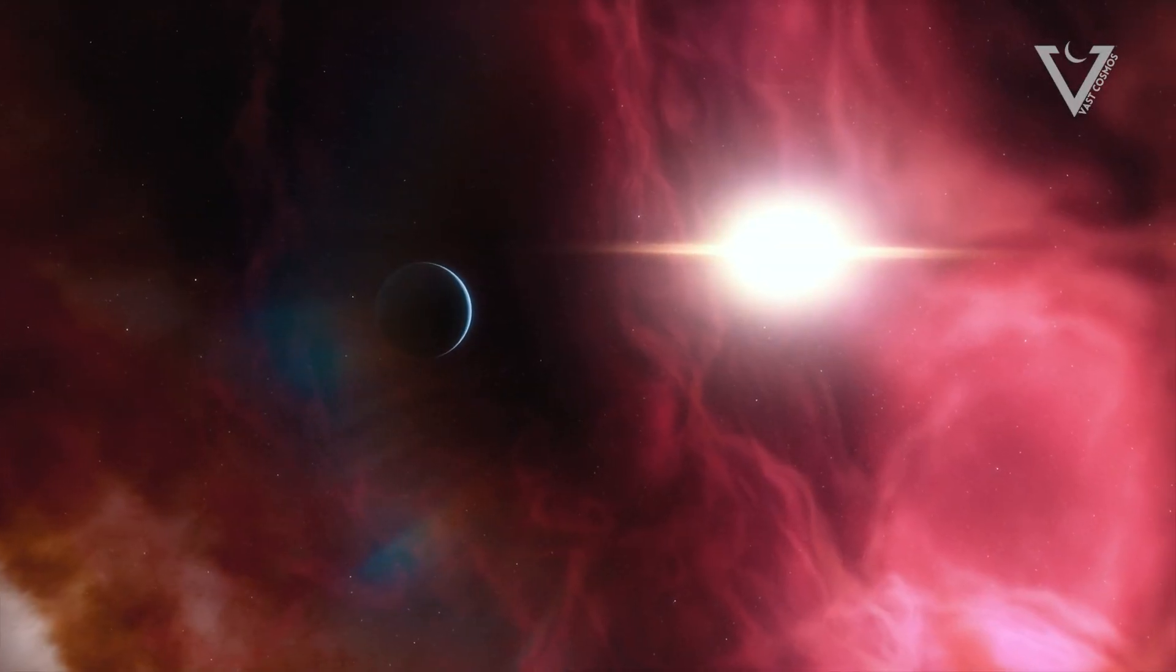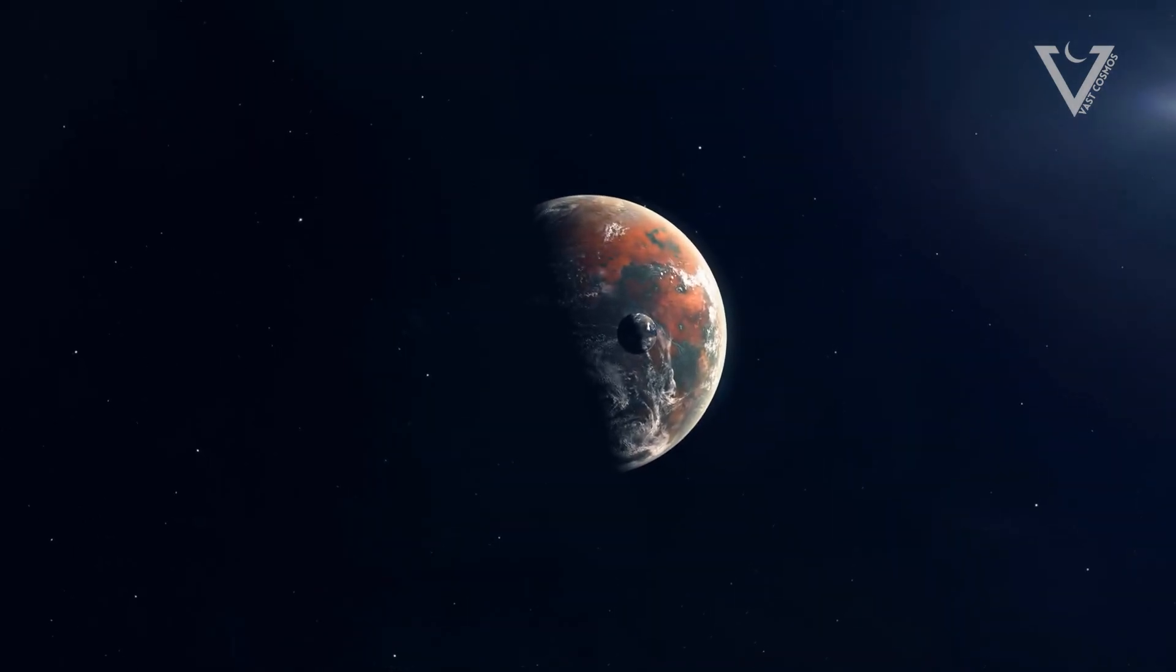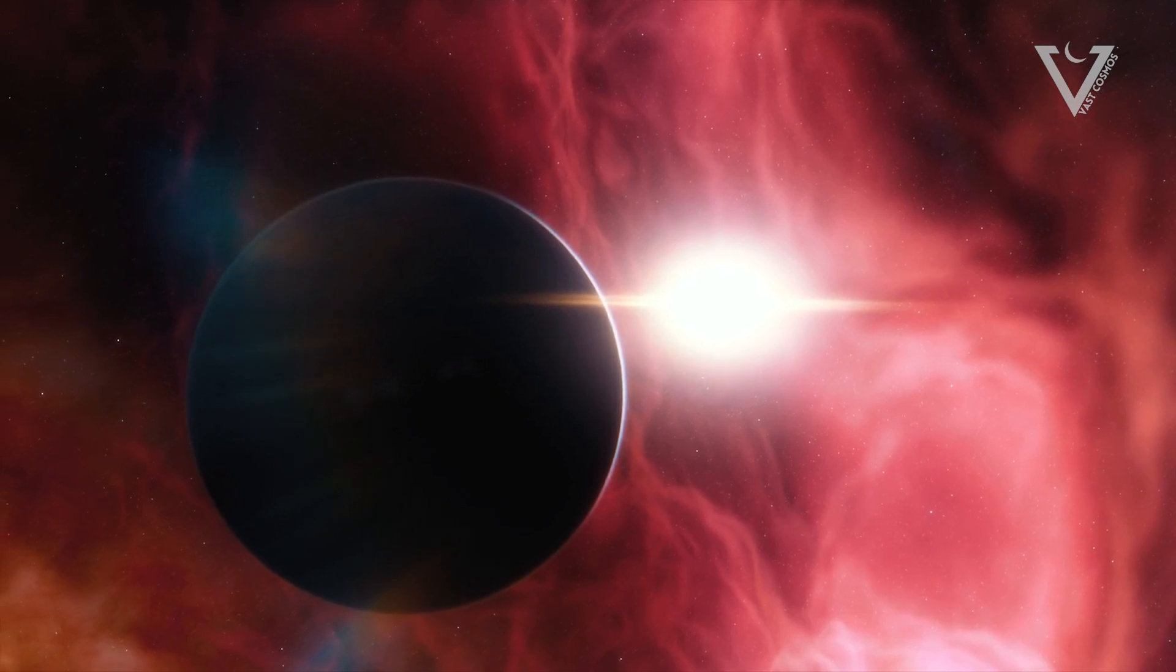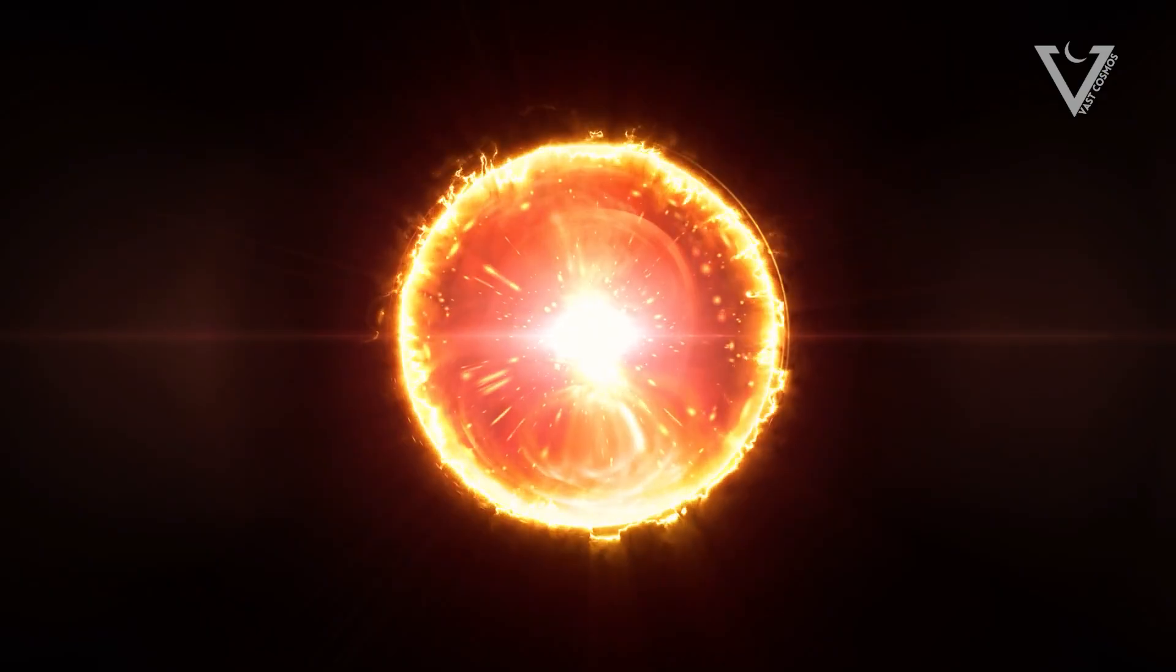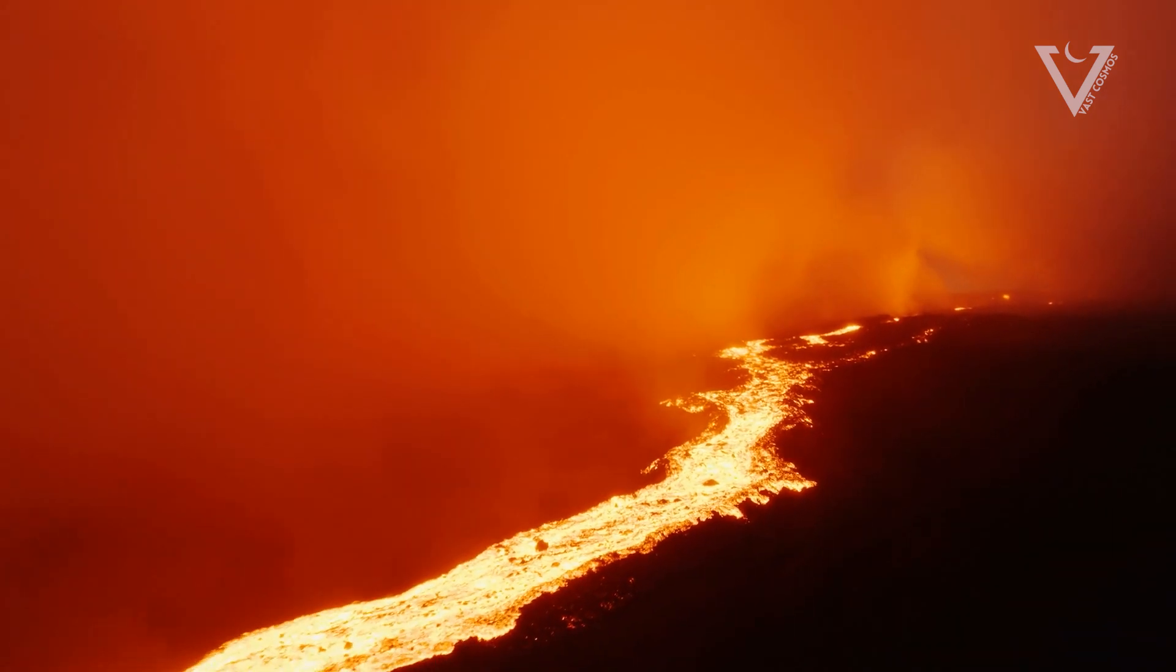Exoplanets are planets that go around stars that are not in our own solar system. They can be very different, like some that are similar to Earth, and others that are called hell planets because they have really rough surfaces.